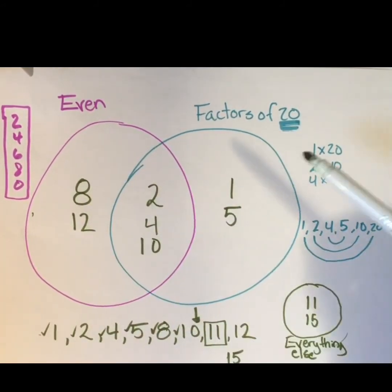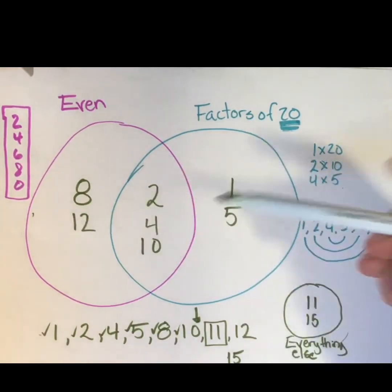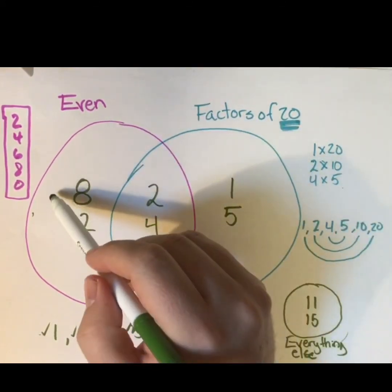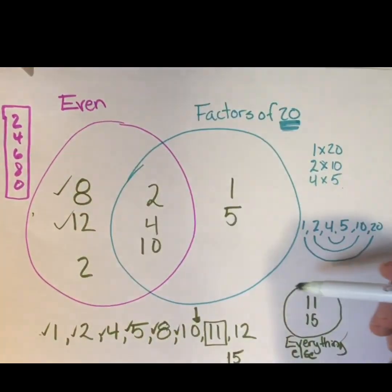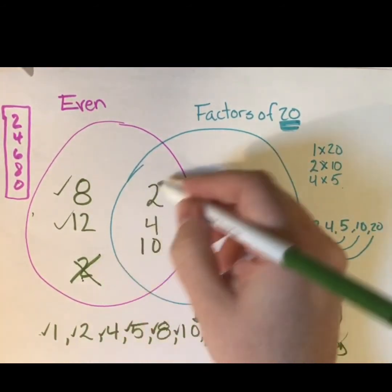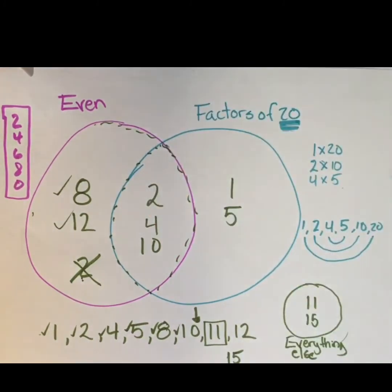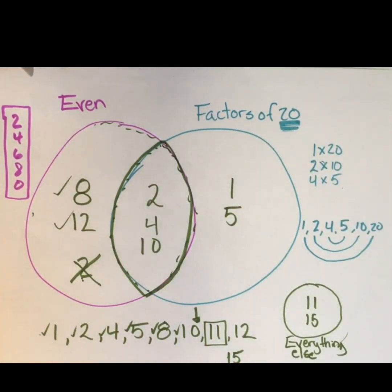So we actually have four spaces: the factors of 20, the even numbers, everything that is both, and everything that is neither — the 'everything else' pile. When you go and do the assignment, be careful because some things might go in the middle. I can't put two only in the even circle, because two is not only even — it's still a factor of 20. So it goes in the middle space. Paying attention to what is in the middle is really, really important. So if you're getting your answers wrong, think about what goes in that middle space. Have fun.